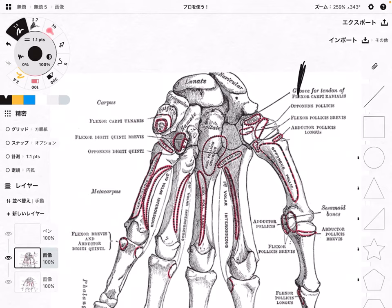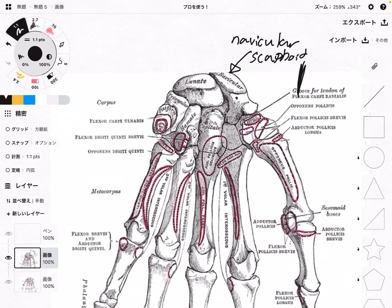The first bone is this one. In this picture it says navicular bone, but some anatomy books refer to it as scaphoid. Either way, if you say navicular or scaphoid, it makes sense. In this video I will call this bone navicular, but you can say scaphoid — either way, people will understand.